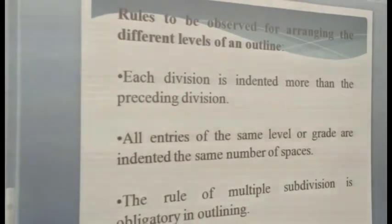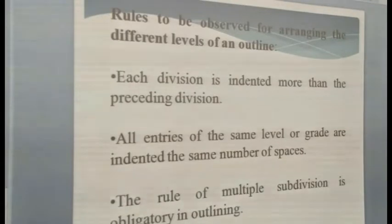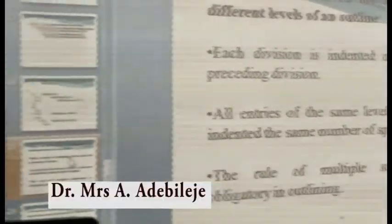Note that the rule of multiple subdivisions is obligatory in outlining. When you have a major idea — for instance, if your topic says 'My Best Friend' — you want to itemize the ideas about your friend. The first major division will be your friend. Then under your friend, you want to tell us her name, her likes and her dislikes — that will form the subdivision. And then under her likes and dislikes, you may want to tell us about the food, the dress, or whatever she likes or doesn't like — that will be another subdivision under the first subdivision.